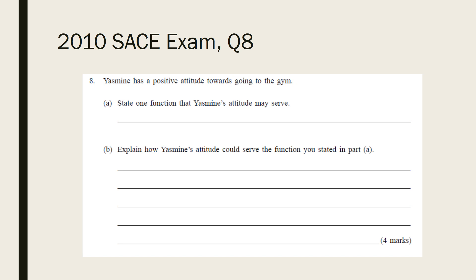Yasmin's attitude could serve the utilitarian function as it is helping her attain her goal of having good physical fitness, as well as perhaps enhancing her self-esteem, both of which are rewards which arouse favourable feelings. Similarly, her attitude could also serve the ego defensive function, as a positive attitude towards going to the gym would protect her self-esteem and prevent her from experiencing unpleasant thoughts and feelings about her self-image and physical fitness.